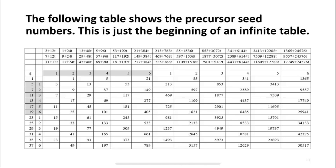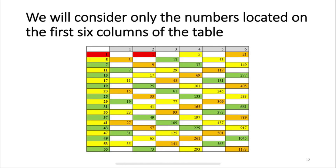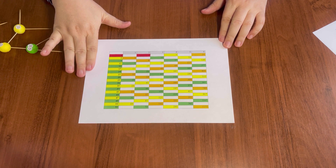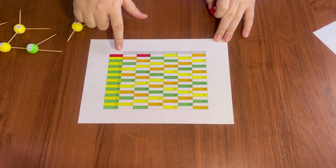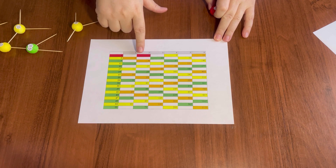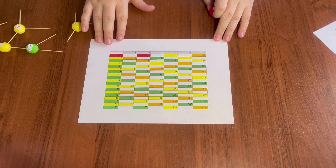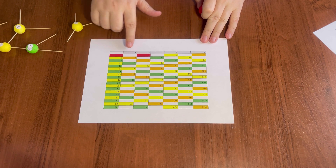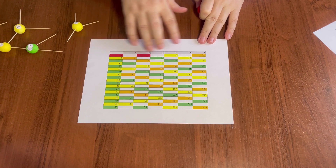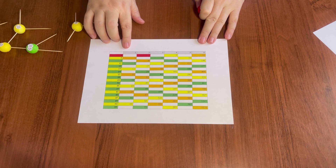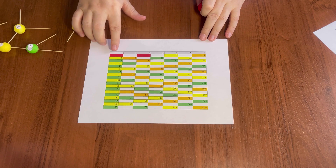The following table shows the precursor seed numbers — this is just the beginning of an infinite table. We will consider only the numbers located in the first 6 columns of the table. We will now construct a small fragment of the Collatz graph tree using the data from this table shown on the previous slide. There are an infinite number of numbers associated with the number 1, but in the table only 3 numbers are shown related to number 1 and other numbers. You can read in the book why we use exactly 6 columns and not 4 or 5.